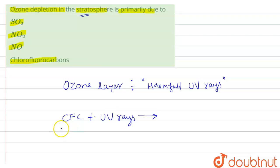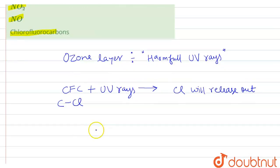This Cl will attack and make bond with O3 ozone, and it will form ClO along with O2 that will be released.